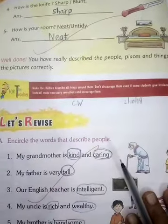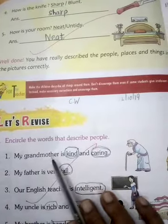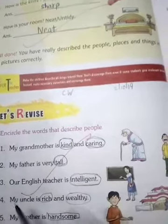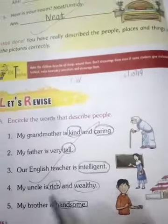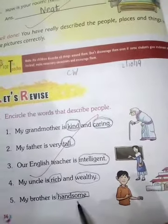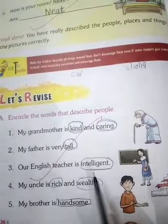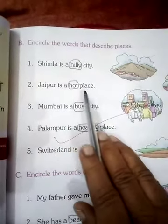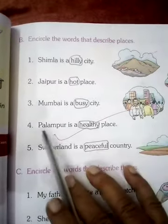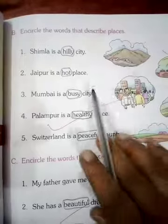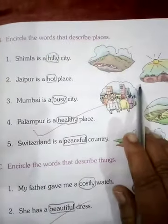Now here are some other exercises. My grandmother is kind and caring. My father is very tall. Our English teacher is intelligent. My uncle is rich and wealthy. My brother is handsome. These are describing words we use for people. Now for places: Shimla is a hilly city, Jaipur is a hot place, Mumbai is a busy city, Palampur is a healthy place, and Switzerland is a peaceful country.